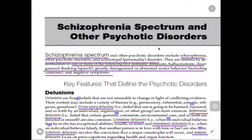Let me start with the first key feature that defines psychotic disorder, which is delusion. What is delusion? In summary, delusion is called a false belief — meaning that a patient holds a belief which is not true and which cannot be shaken.